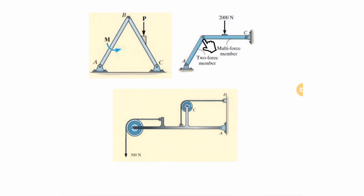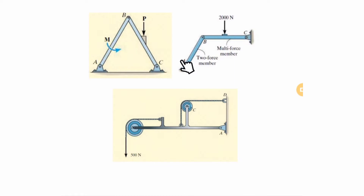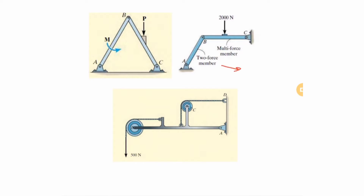For two-force members, you can replace them with a single force — that was a common thing in trusses, where a link could be replaced by a force in the direction of the line connecting A and B. But in frames it is not that easy; you need to satisfy specific conditions: only two connection points, no forces or moments applied in the middle.